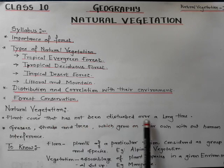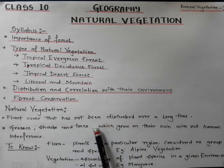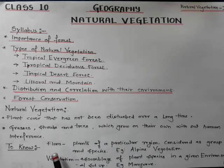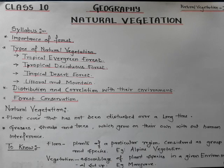Natural vegetation means plant cover that has not been disturbed over a long time. Grasses, shrubs, and trees which grow on their own without human interference are known as natural vegetation. As part of natural vegetation, flora means plants of a particular region considered as a group. For example, alpine vegetation is found only along mountain slopes and has characteristic features — trees are usually conical in shape with needle-shaped leaves to promote evapotranspiration.